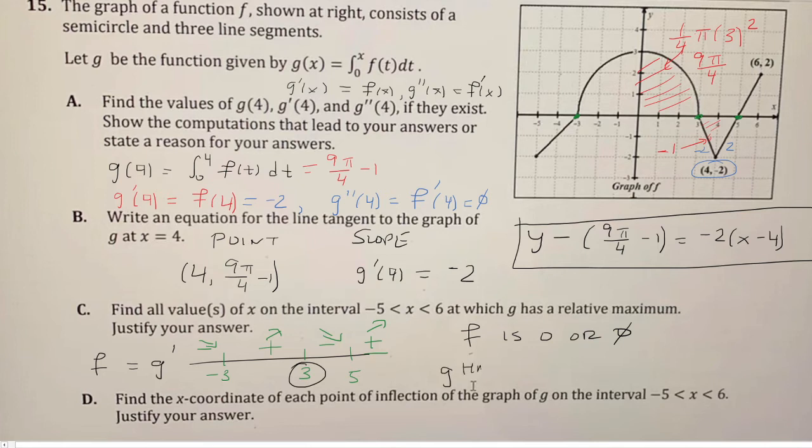So g has relative max at x equals 3, because the derivative is positive and then negative. So that would be the explanation.